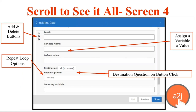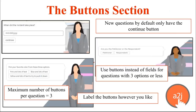If we continue to scroll down, we get to the Buttons section. By default there's one button on every new question — the Continue button — because the end user has to have some way to move from one question to the next. You can have a label on your button — it's what displays to your end user. You can assign a variable to that button so that when selected, the variable is assigned whatever you put in the default value. The destination is the next question in the line for your end user.